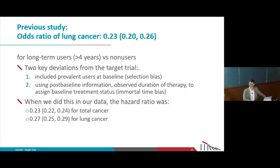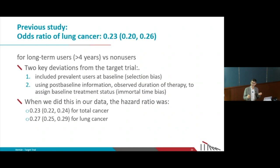We looked into the analysis of that paper and found two major deviations from the emulation of a target trial. The first is that the comparison was not between people assigned to start statins versus those not starting, but rather the statin group consisted of prevalent users — people who had already been using statins for some time — something we would never do in a randomized trial.